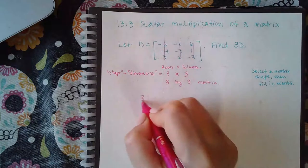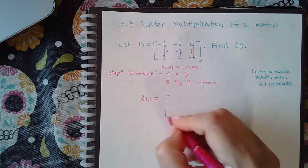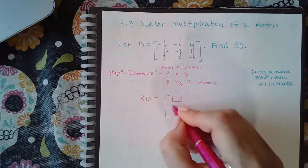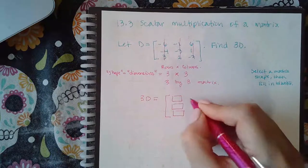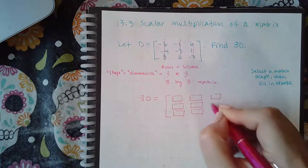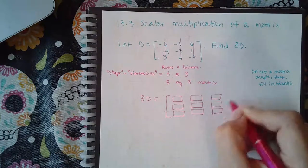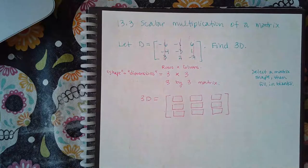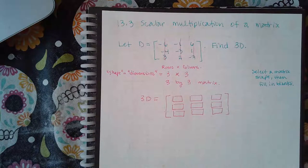So when I go into ALEKS, I will have to select the matrix that has the three rows and the three columns. And then it's just a matter of putting in the numbers for each row or for each entry.